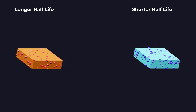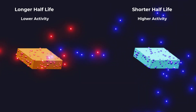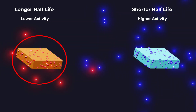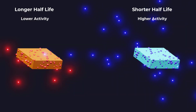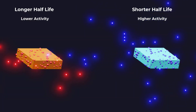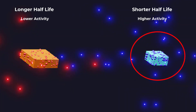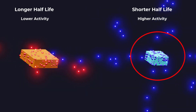The half-life of a material also affects its level of activity. A sample with a shorter half-life will have a higher level of activity than a sample with a longer half-life, even if both samples contain the same amount of radioactive material. This is because the shorter the half-life, the more quickly the radioactive atoms decay, producing more radiation per unit time.